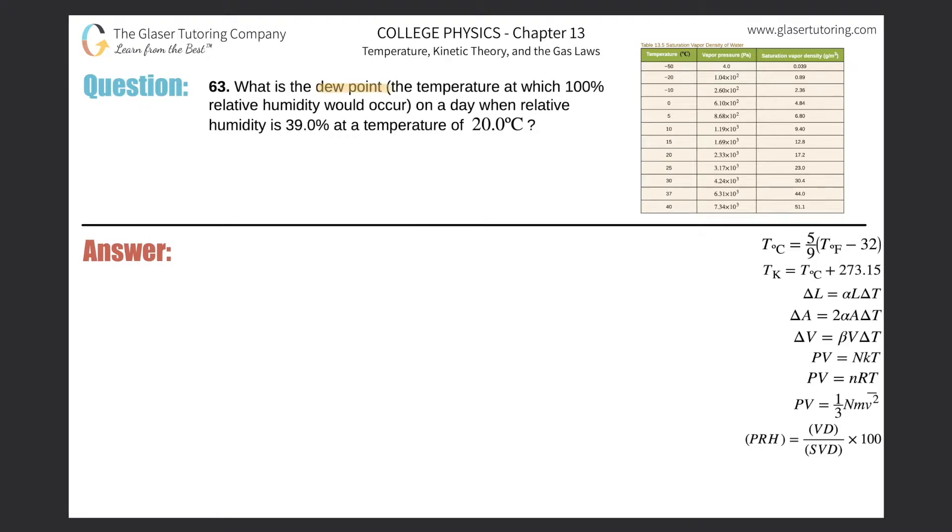Number 63. What is the dew point, or the temperature at which 100% relative humidity would occur on a day when relative humidity is 39% at a temperature of 20 degrees Celsius?